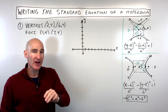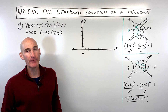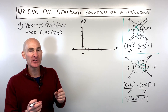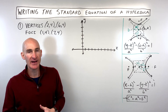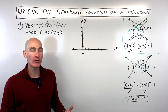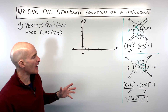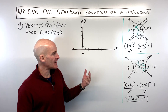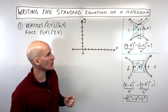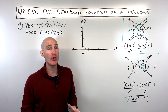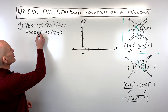In this video we're going to go through three different kinds of examples involving writing the standard form of the equation of a hyperbola when you're given certain bits and pieces, like the vertices and foci, the asymptotes, or a point on the hyperbola. I'm going to assume you know a little bit about hyperbolas, and we'll go through key components as we work through the examples. Let's dive into the first example.